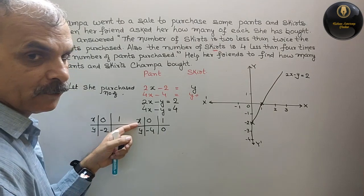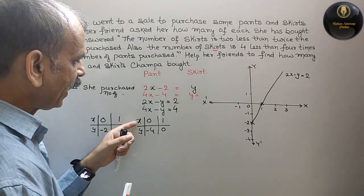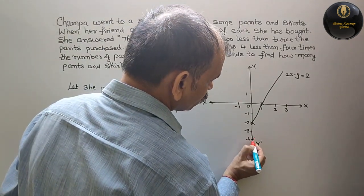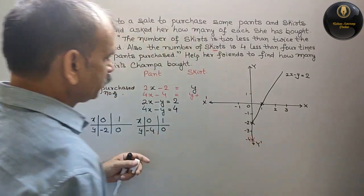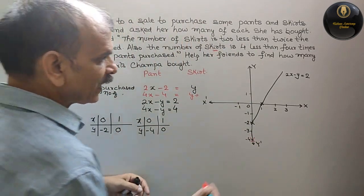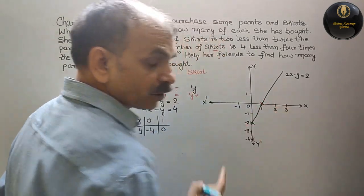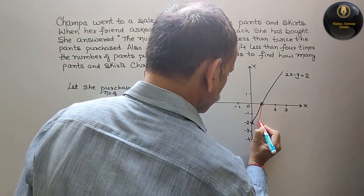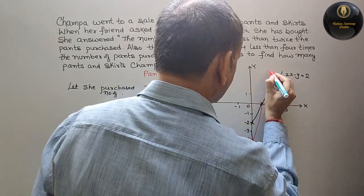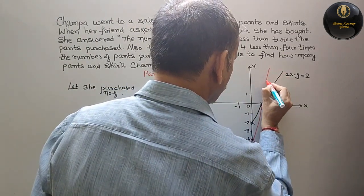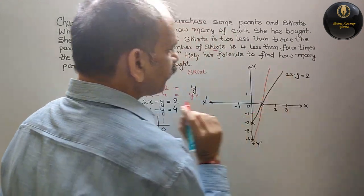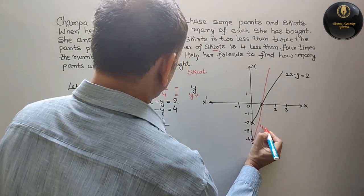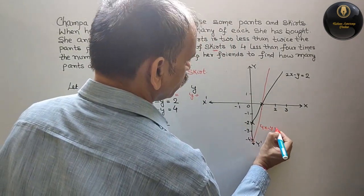Now for the second equation: when X is 0, 4x is 0, so minus y = minus 4, meaning y = minus 4 — point is (0, −4). When Y is 0, 4x = 4, so x = 1 — point is (1, 0). Join both points to draw the second line for equation 2: 4x minus y is equal to 4.